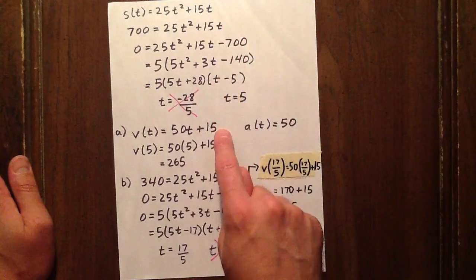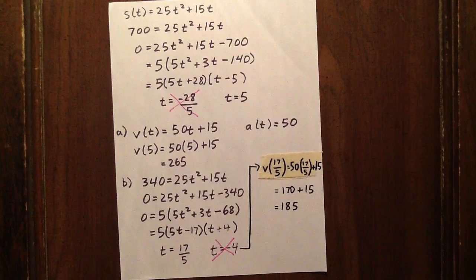So what is the velocity of the car at 5 seconds? We can figure that out by taking the derivative of the displacement expression with respect to time and subbing in a t value of 5. So after 5 seconds, the car is traveling 265 meters per second.